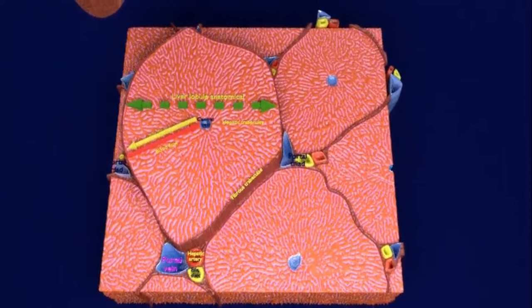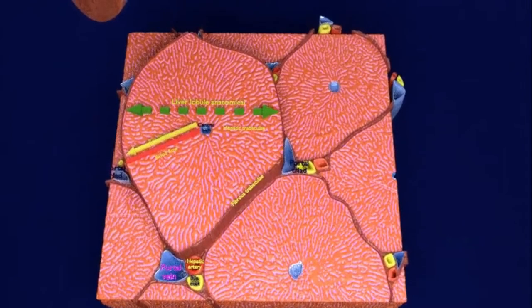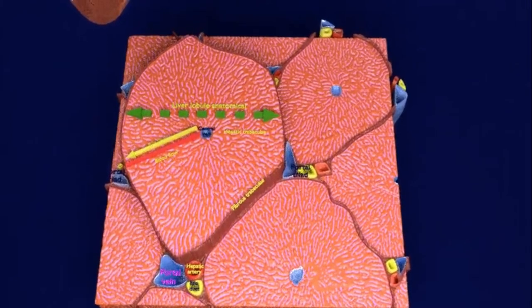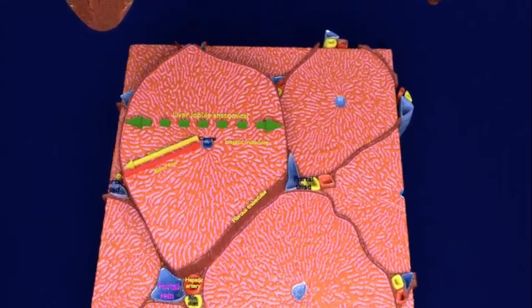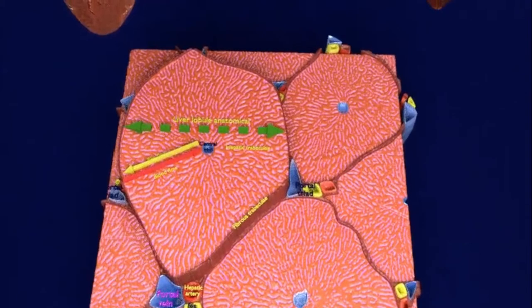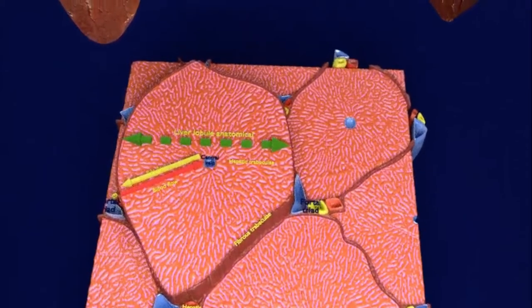The model shows multiple anatomical lobules of liver, some of which are complete and some of which are partially cut. These anatomical lobules that you are able to see are separated by fibrous trabeculae shown brown in color.